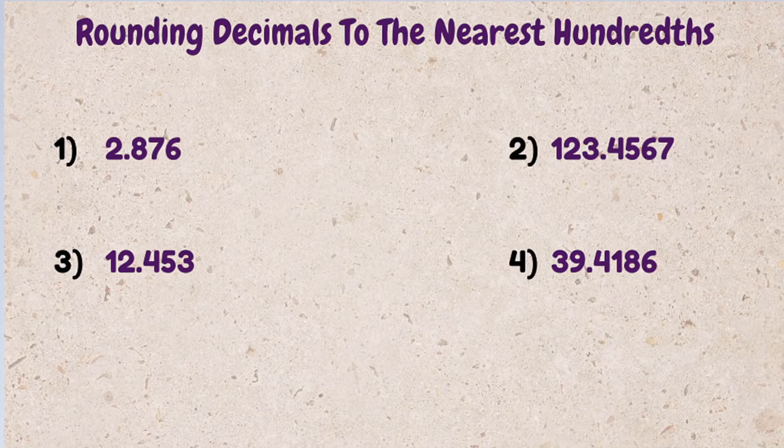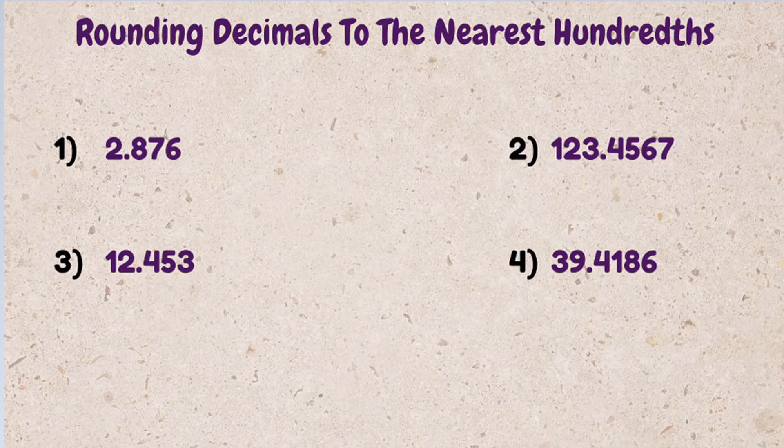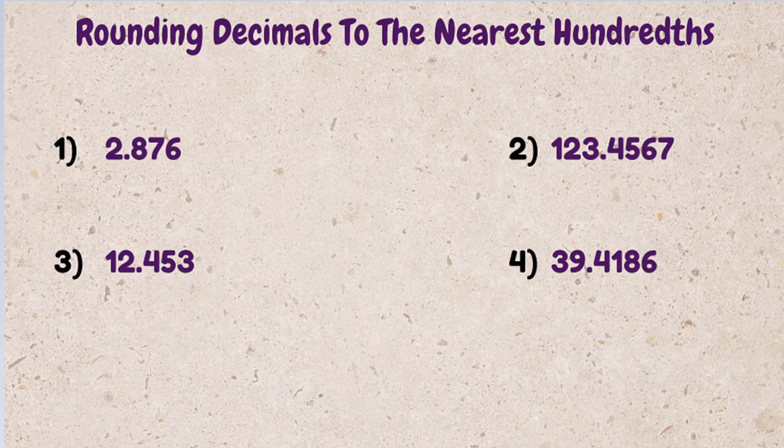The first thing we're going to do is identify what digit is in the hundredth spot. We then look at the digit to the right and evaluate. If it's five or greater, we round up. If it's four or lower, we round down, or it keeps the digit the same. Let's check it out.